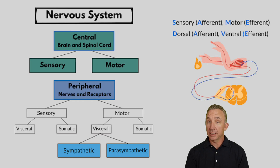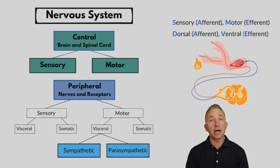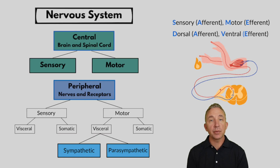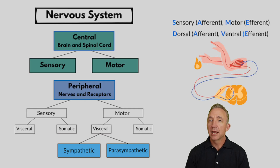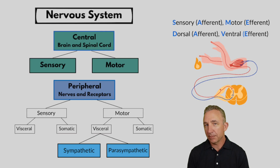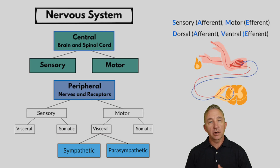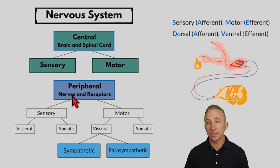The central nervous system can do three things: it can sense, interpret, and react. Most of the time it's interacting with the peripheral nervous system. Peripheral — towards the edge or outside of the central nervous system — is essentially all the nerves and all the receptors associated with it. We'll talk about different receptors in the body that help communicate with the nerves.